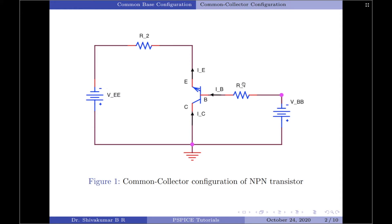The input signal is connected directly to the base terminal, while the output signal is taken from across the emitter load resistance. This configuration is commonly known as a voltage follower or emitter follower circuit. The common collector or emitter follower configuration is very useful for impedance matching applications because of its very high input impedance in the region of hundreds of thousands of ohms, while having a relatively low output impedance.